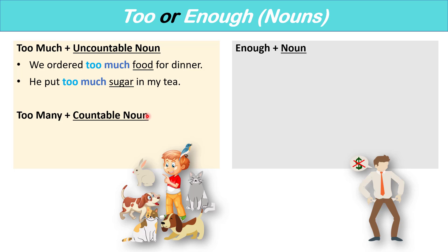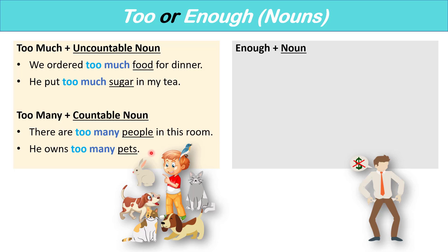With countable nouns, we use 'too many.' There are too many people in this room — now the room is crowded. He owns too many pets; this boy has more pets than he should because he doesn't have enough room in his house. With 'enough,' we put it before a noun, either uncountable or countable. There is enough food for everyone — that means we have a sufficient amount of food. If there are eight people at the party, we have enough food for eight people. If we have too much food, that means we ordered way more than we should have.